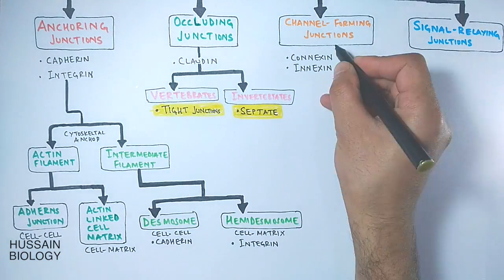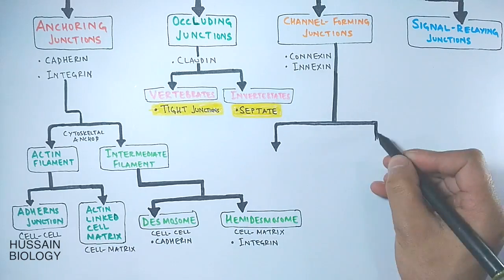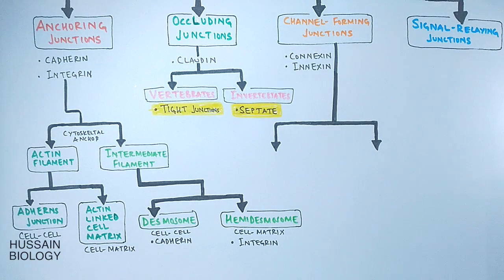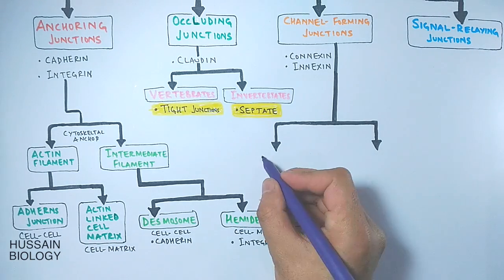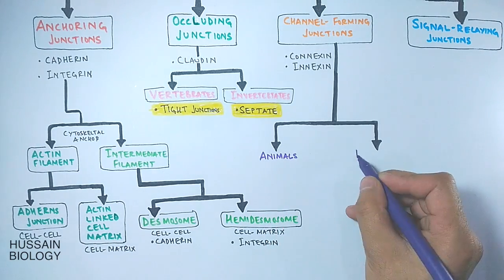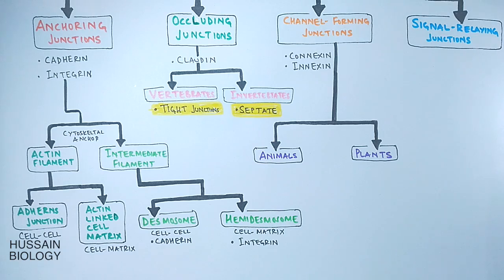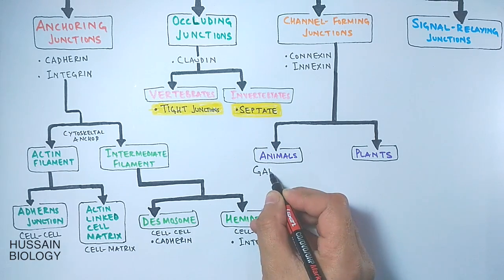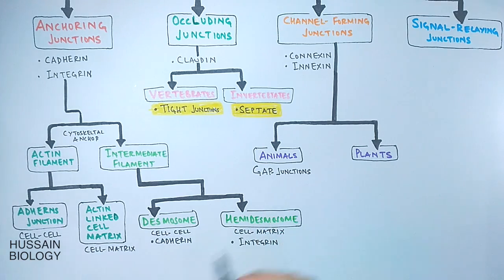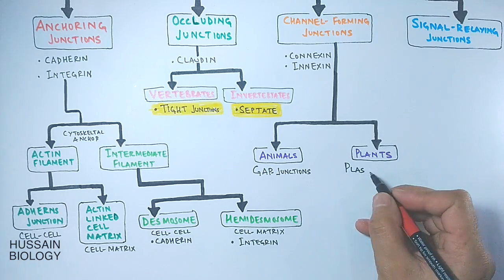The third type is channel forming junctions. We classify them under animals and plants. In animals these are termed gap junctions, while in plants these are termed plasmodesmata.